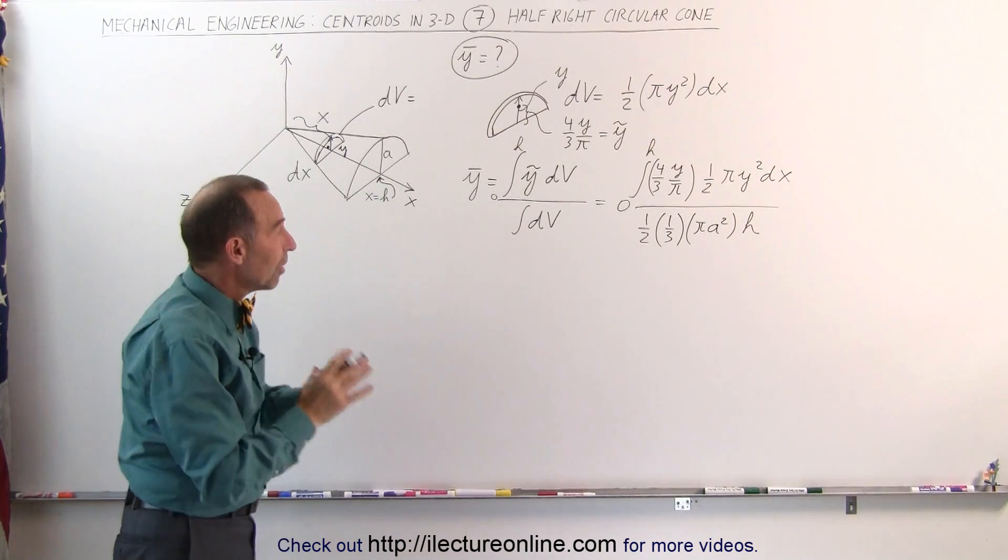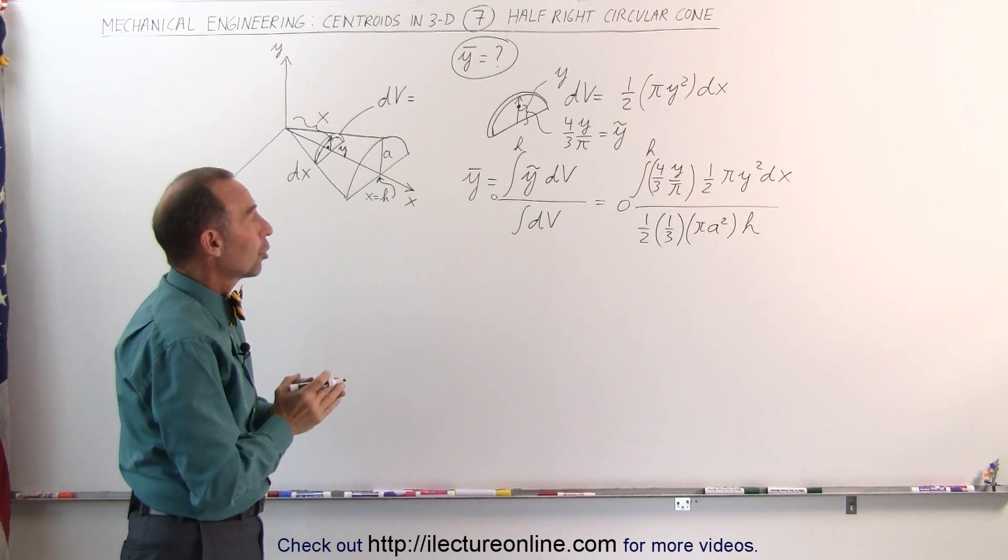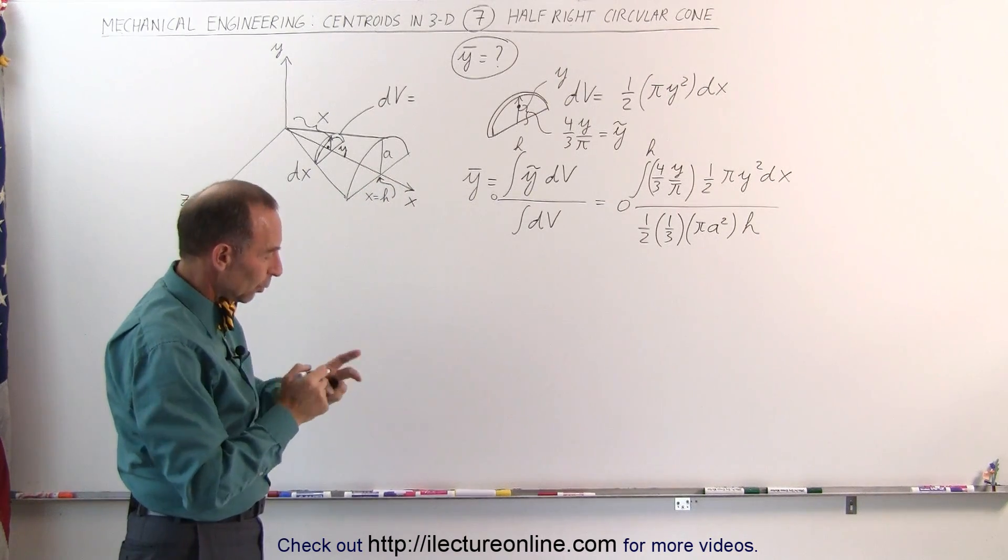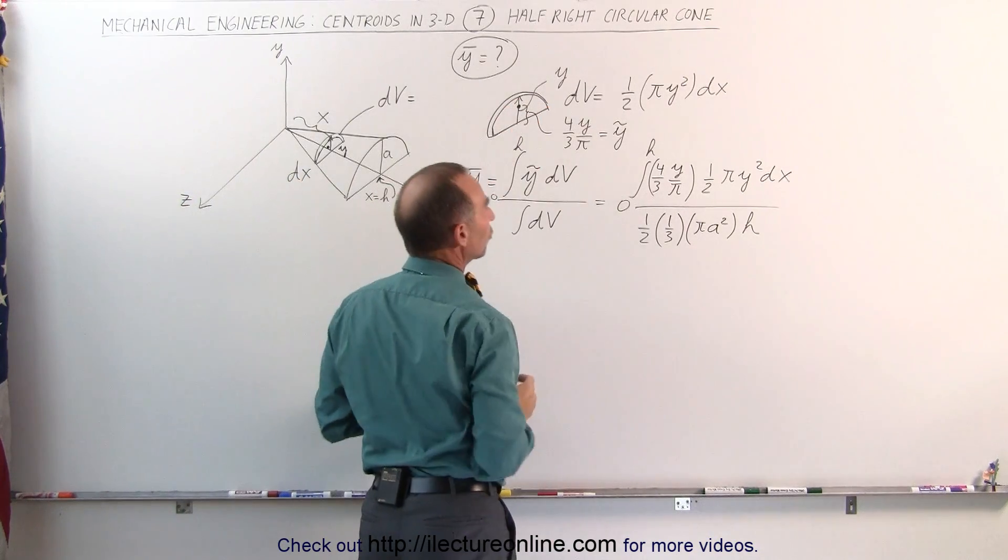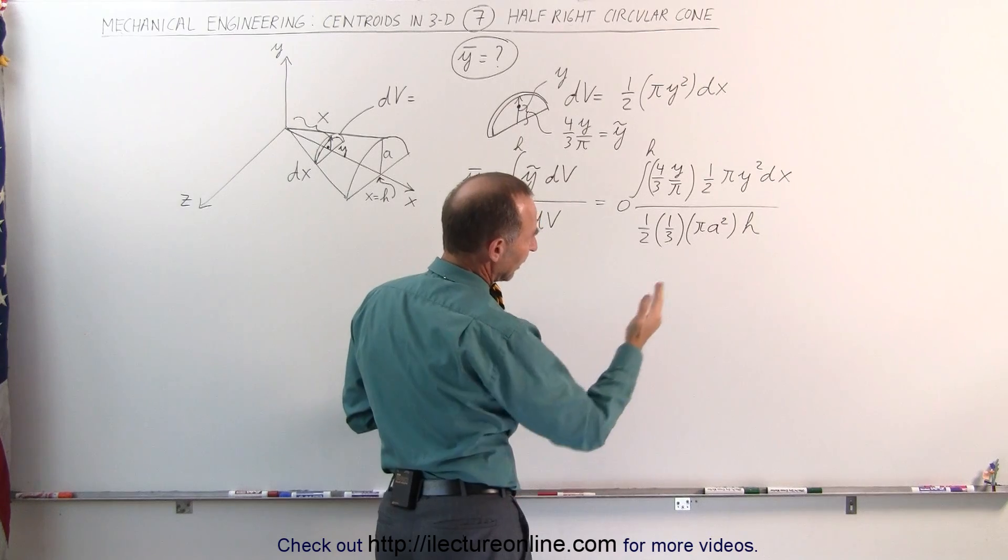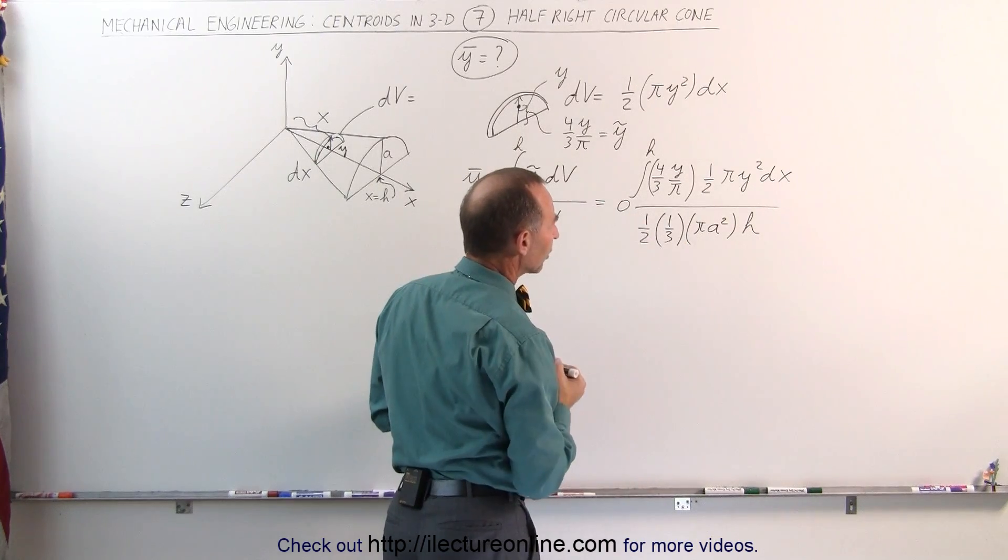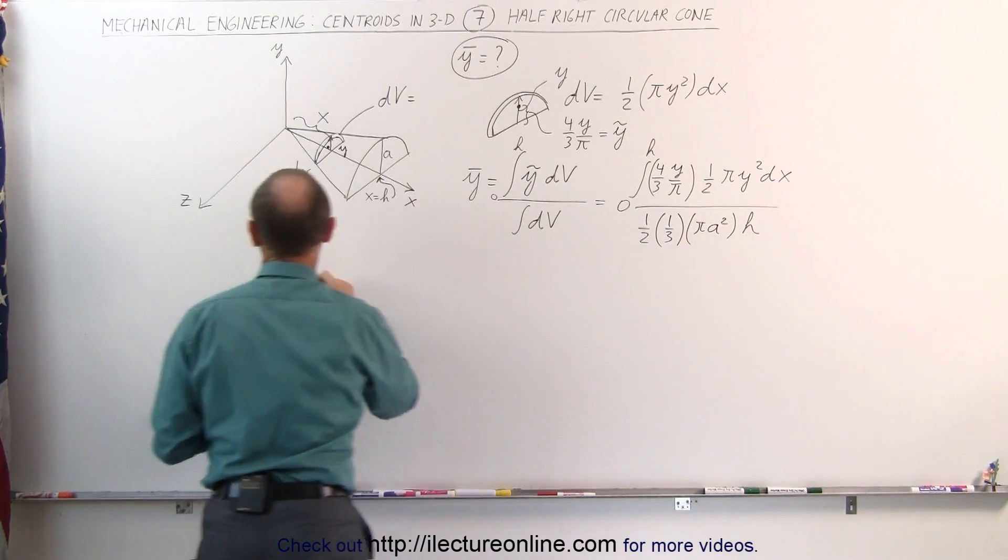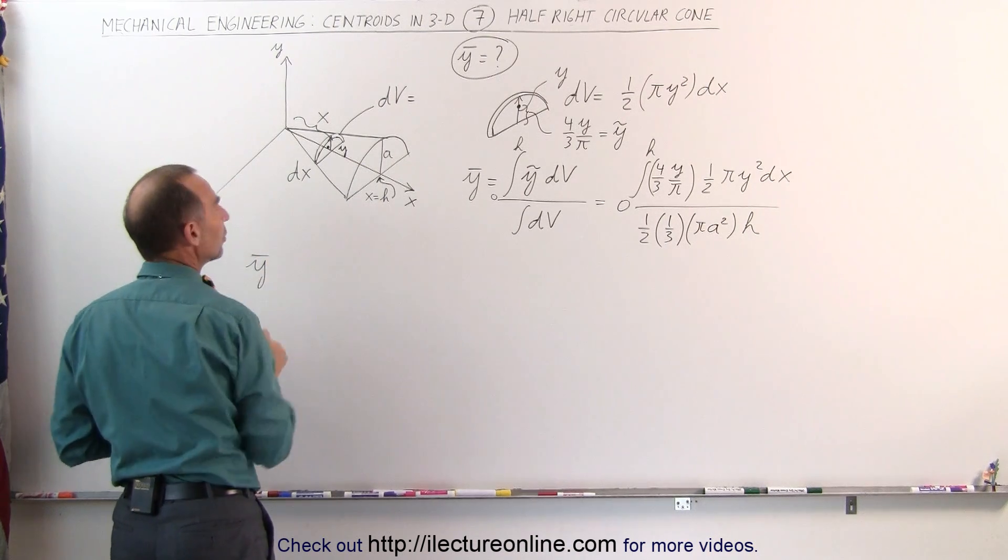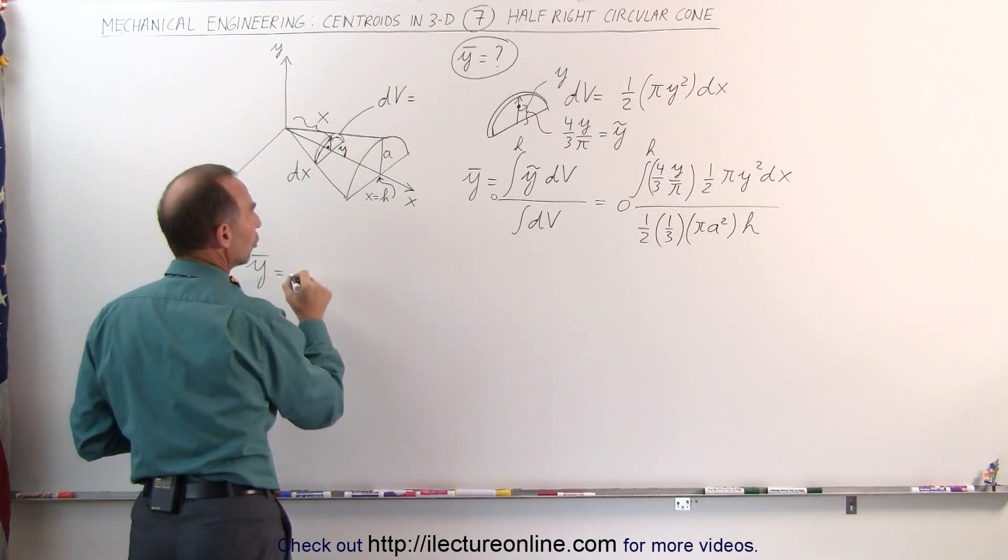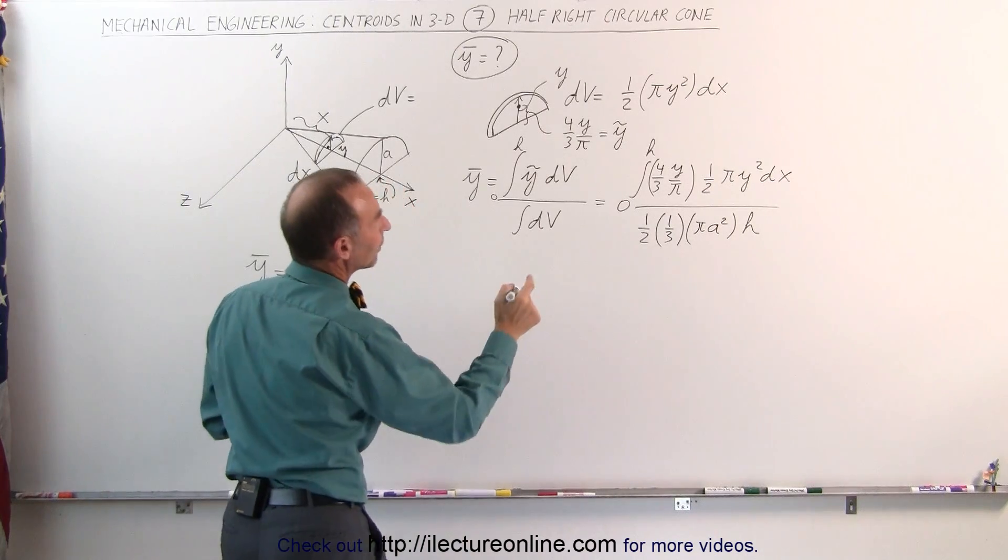The denominator now has the volume of a half right circular cone and the numerator will now have the equation we need to find the y coordinate of the centroid. Let's take out some of these constants to make it look a little bit better. Y, the y coordinate of the centroid is equal to, in the numerator we can take out, well 4 thirds divided by 1 half is 2 thirds.